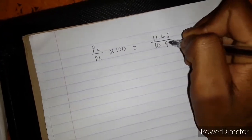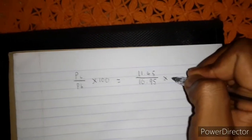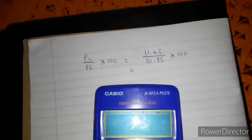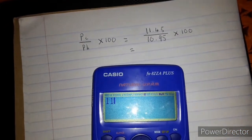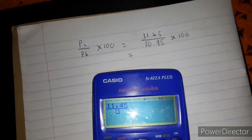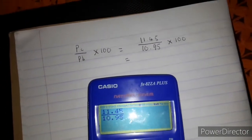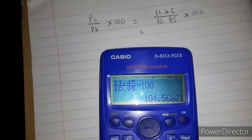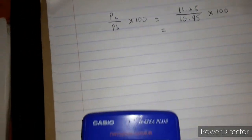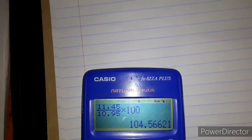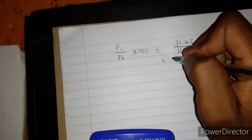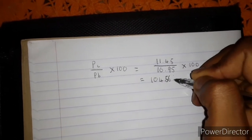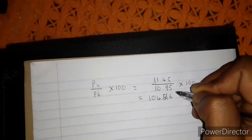10 Rand 95, times 100. The answer is 11.45 divided by 10.95, which gives 104.566.